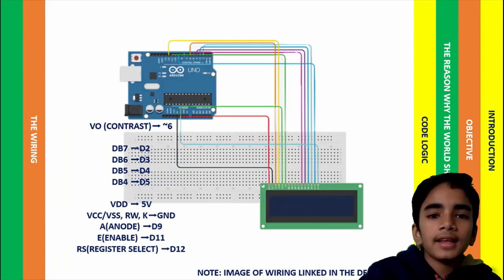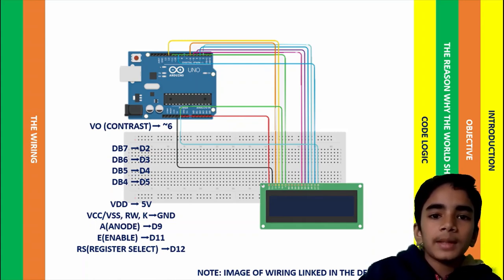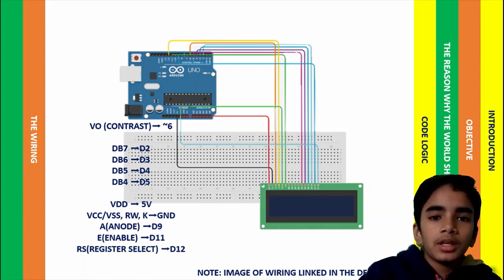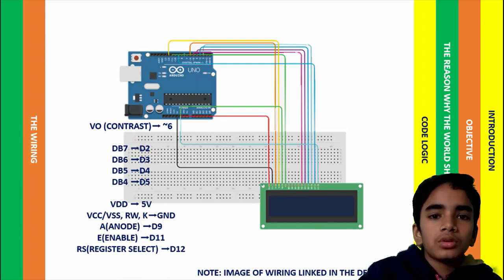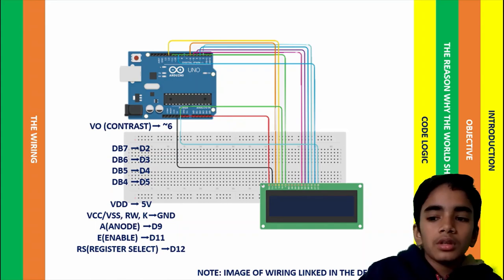The wiring is as follows. I connected the contrast pin of the display to digital pin 6 of Arduino, DB7 to D2, DB6 to D3, DB5 to D4, and DB4 to D5. VDD to 5V, RW and K to ground, anode to D9, enable to D11, and RS to D12.